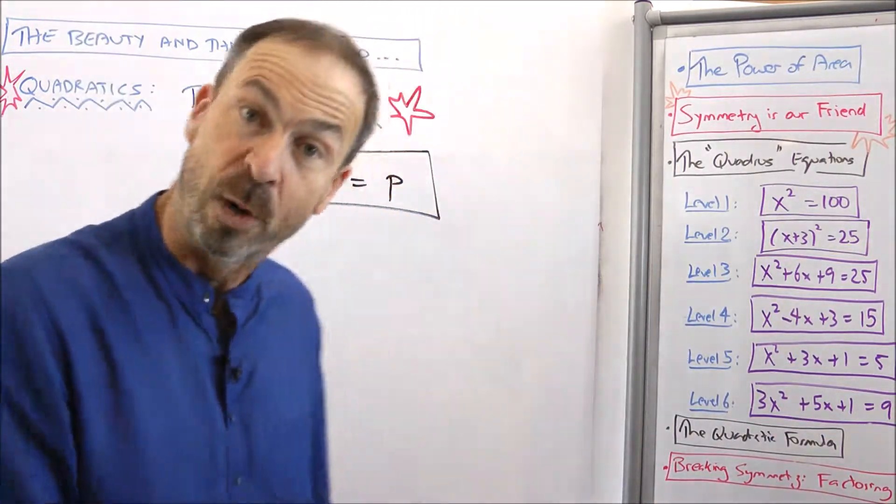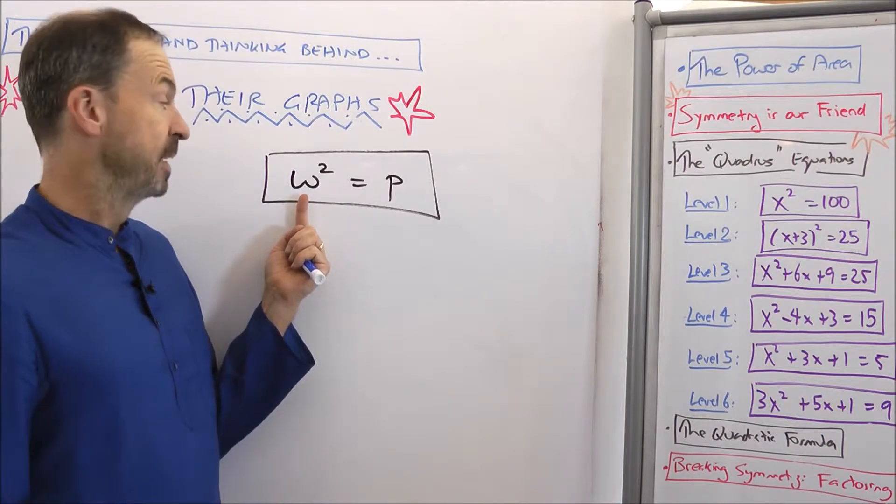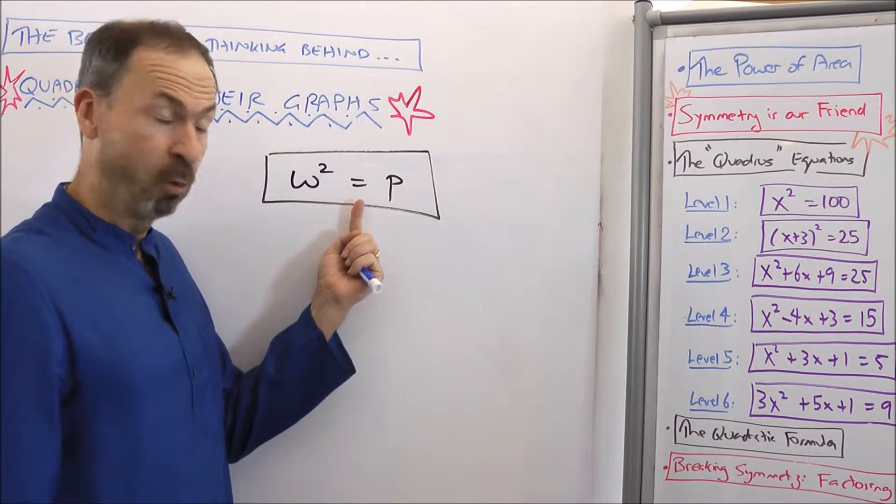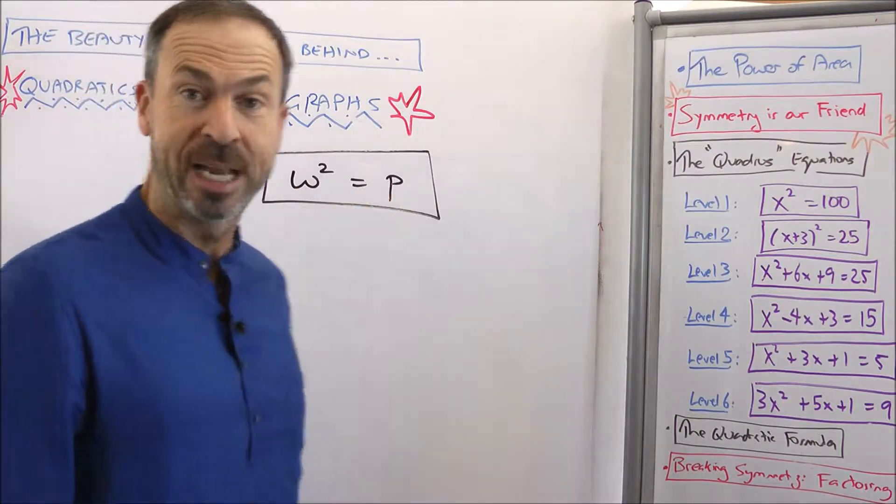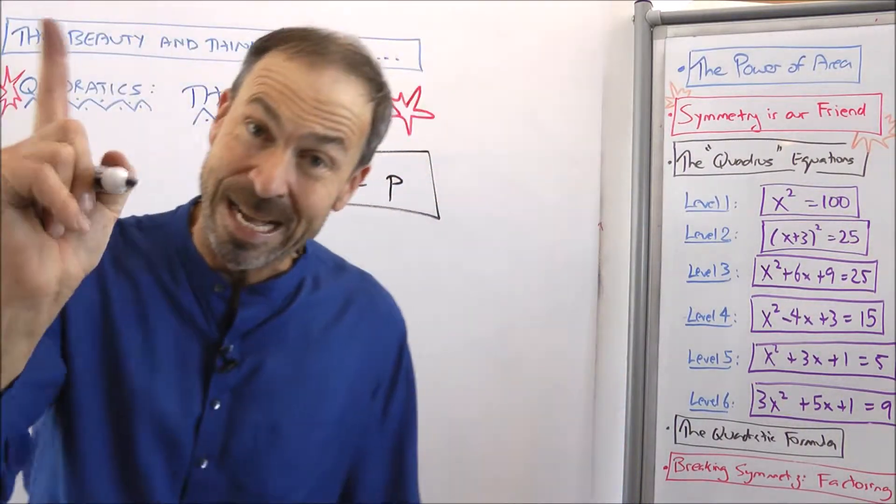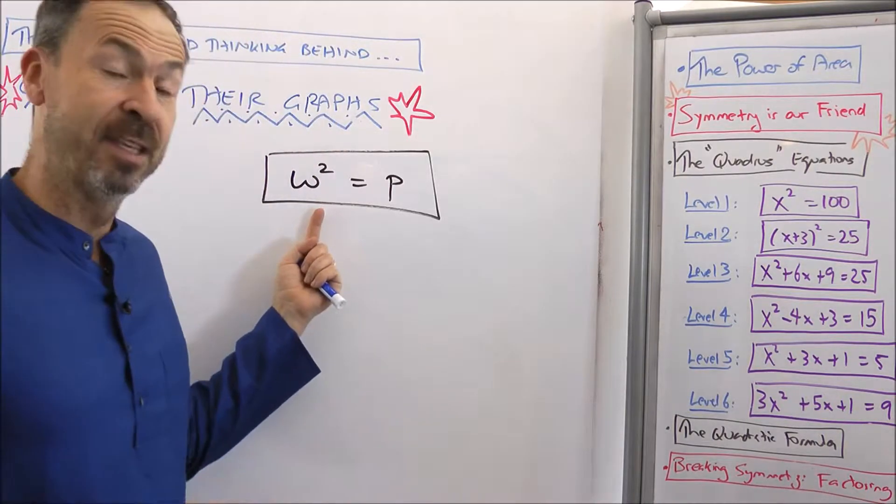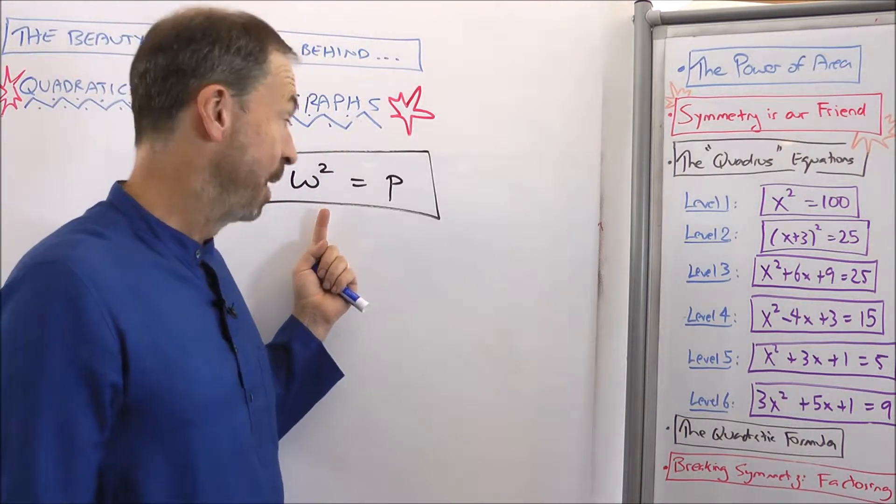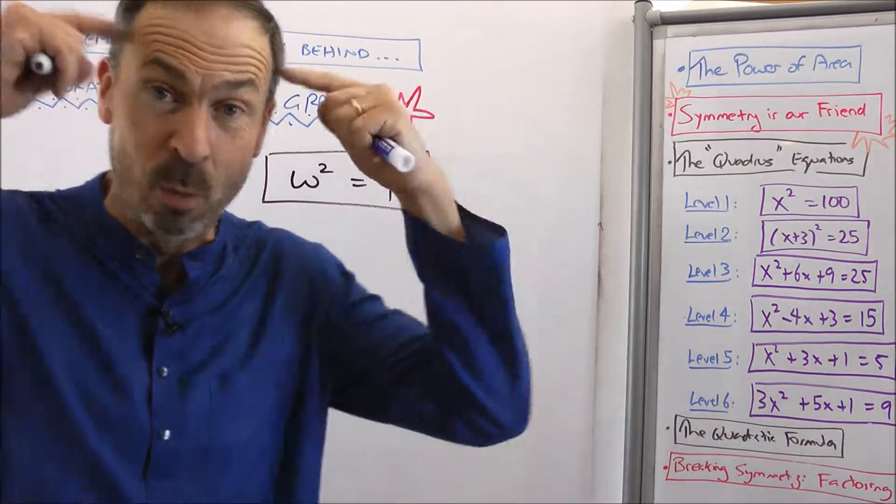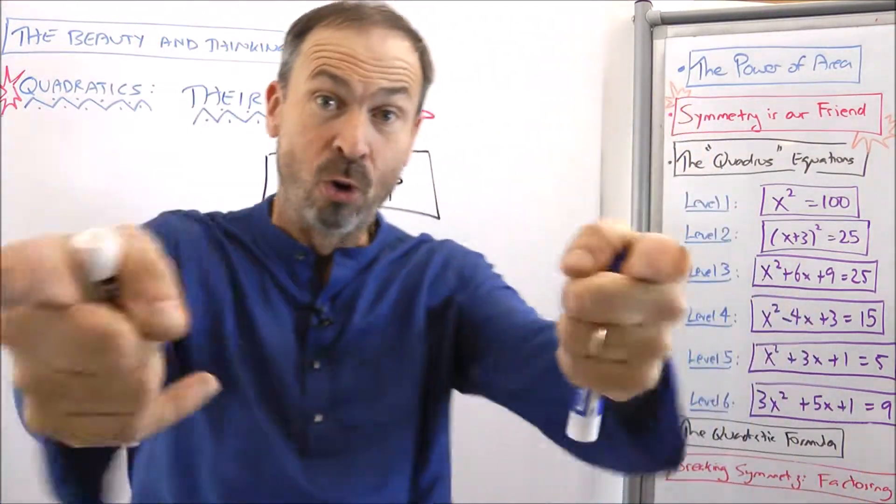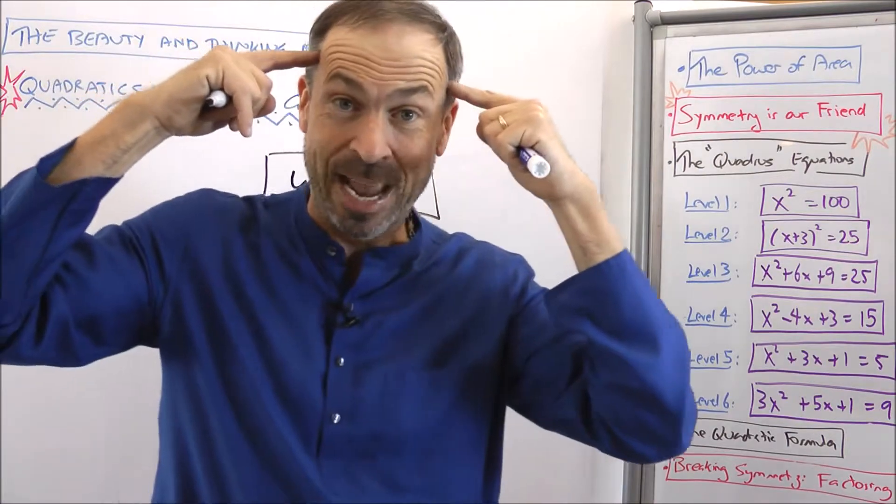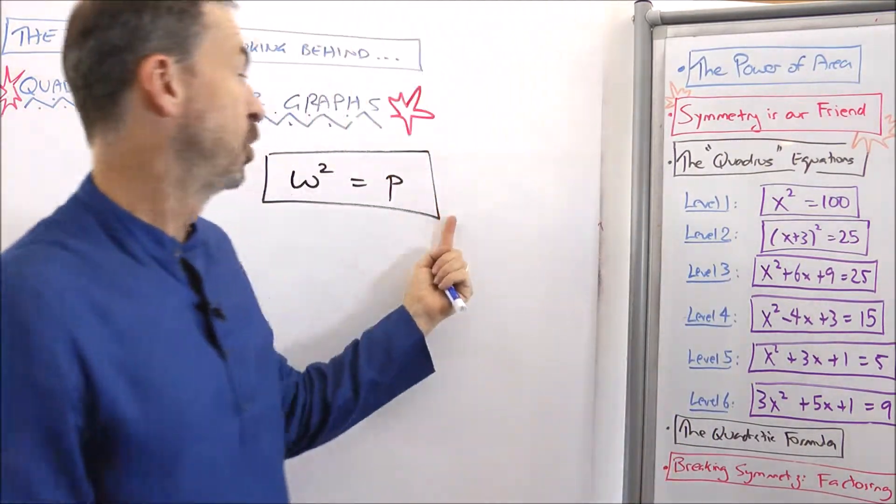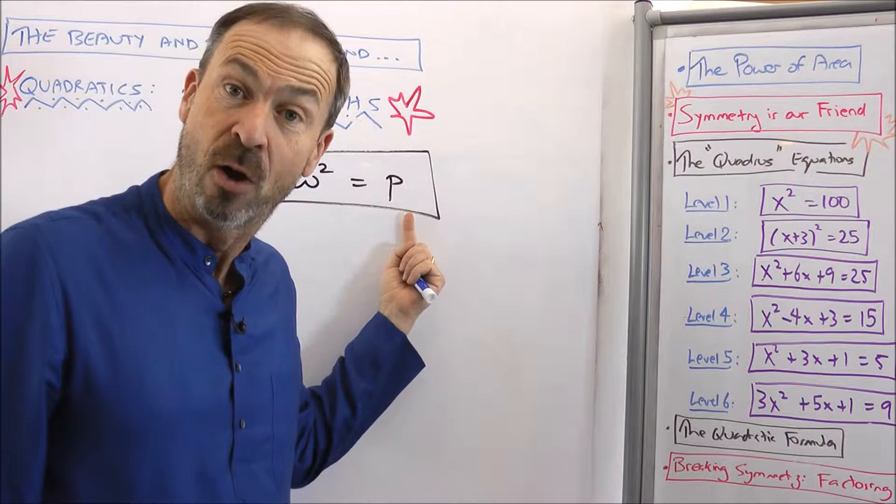But I don't know which numbers. So there's a noun, some unknown number squared. Here's a verb, equals. Here's an object, some other unknown number. I'm not told what W and P actually are. So that means right now I don't know if this sentence is true or false. I need to know what W and P actually are. We don't know when this is going to be true and when this is going to be false.